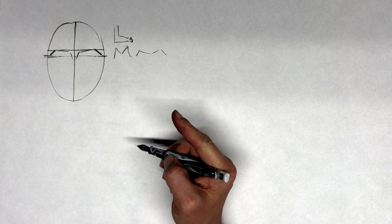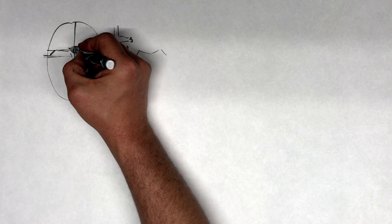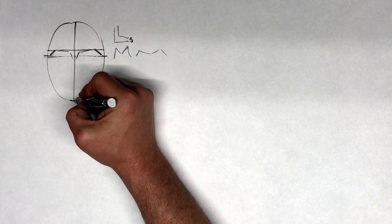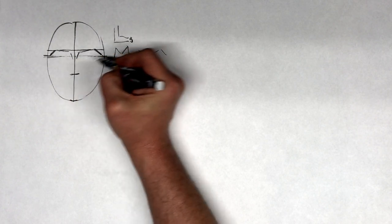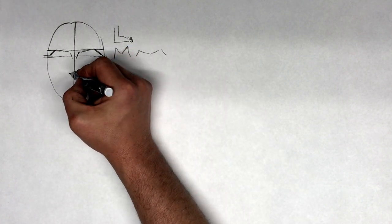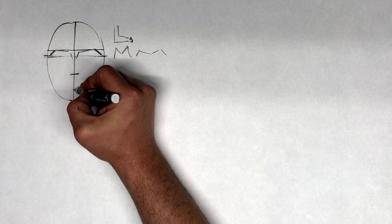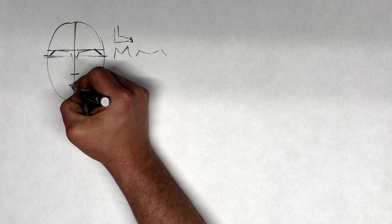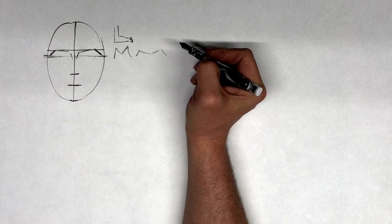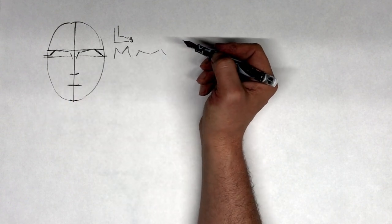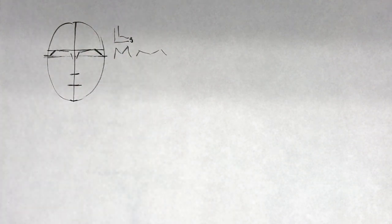Now that we have the brow line established, we can find the base of the nose and the line of the mouth. If we take the distance from the brow line to the chin and find the middle, that'll give us a pretty good indication of where to place the nose. And then if we take the line of the nose to the chin and find the middle of that, that'll give us a pretty good indication of where to place the mouth. You can see that we already have something that looks kind of like a head.